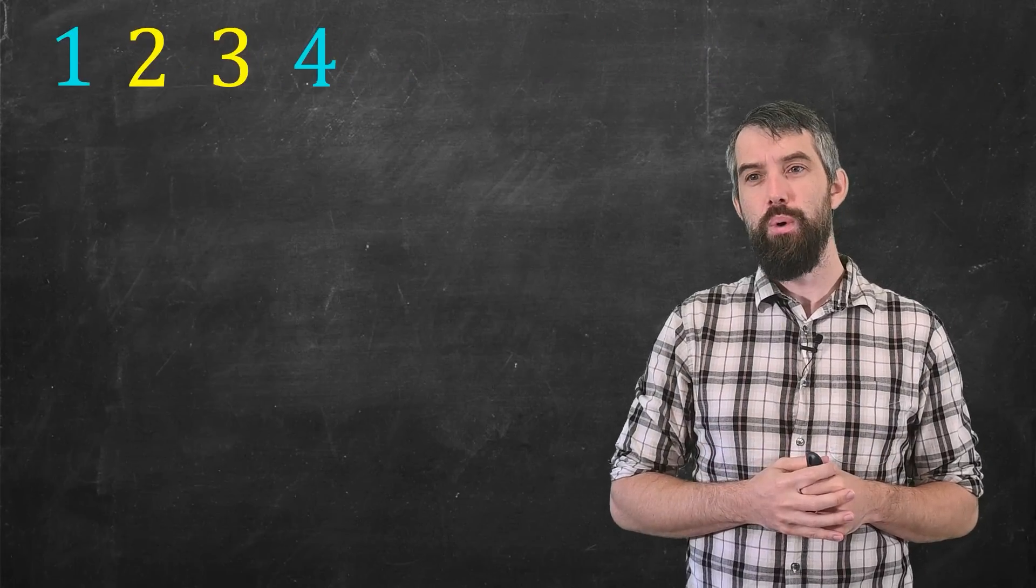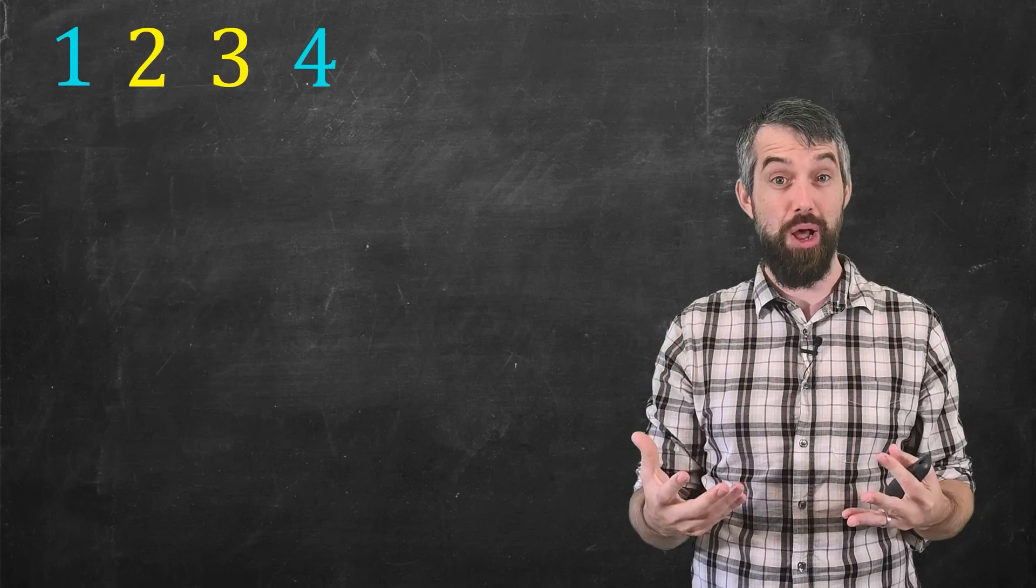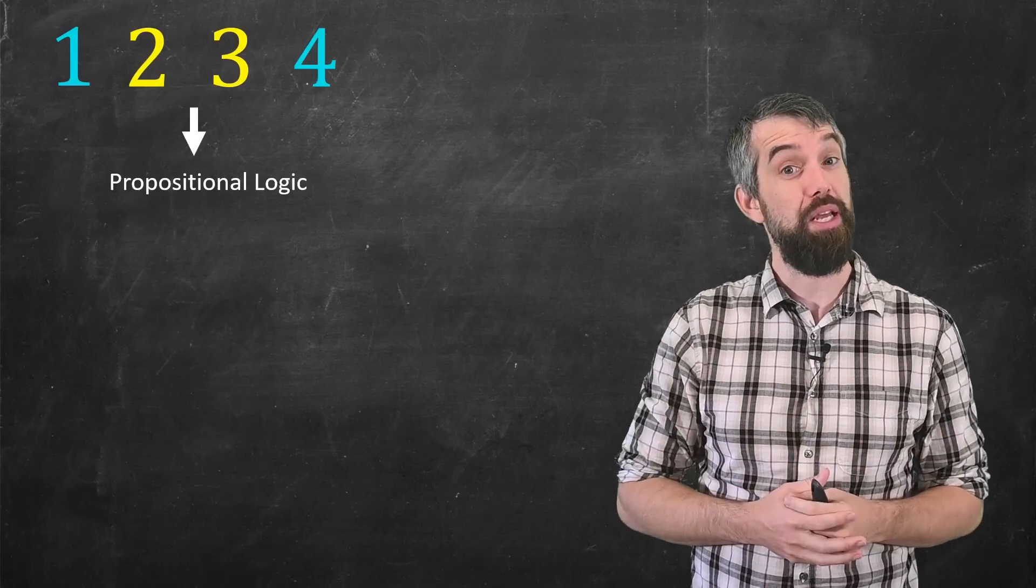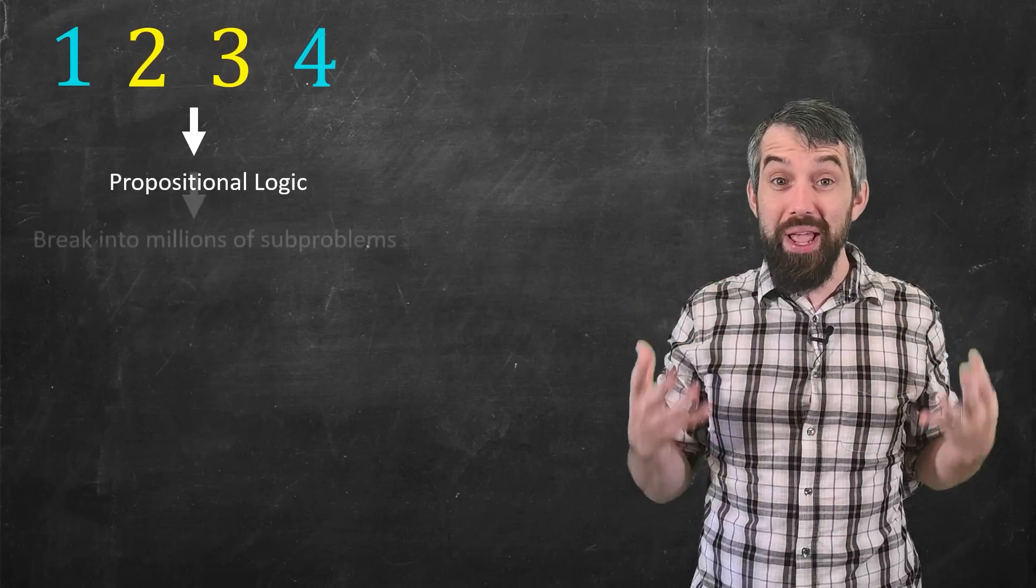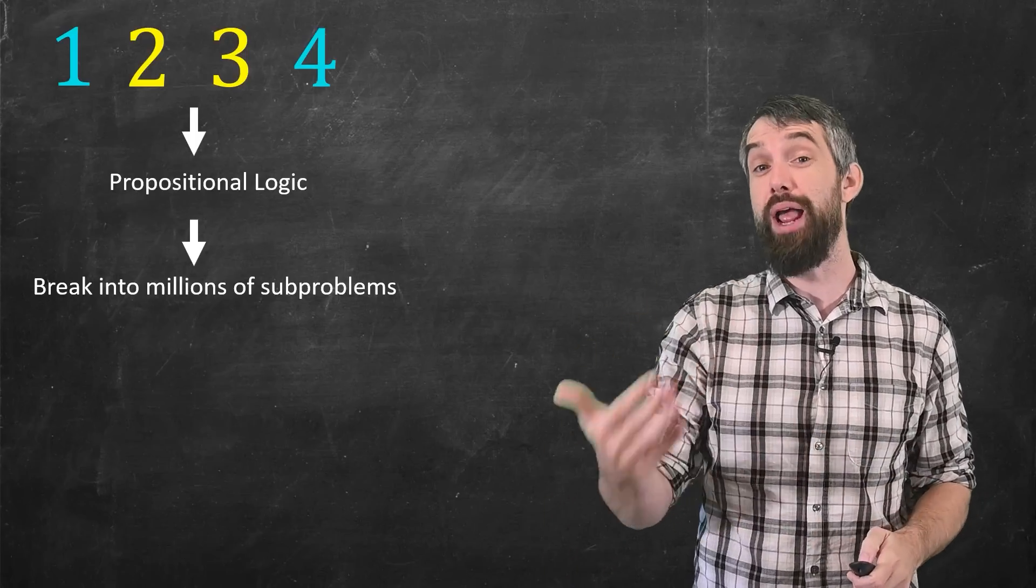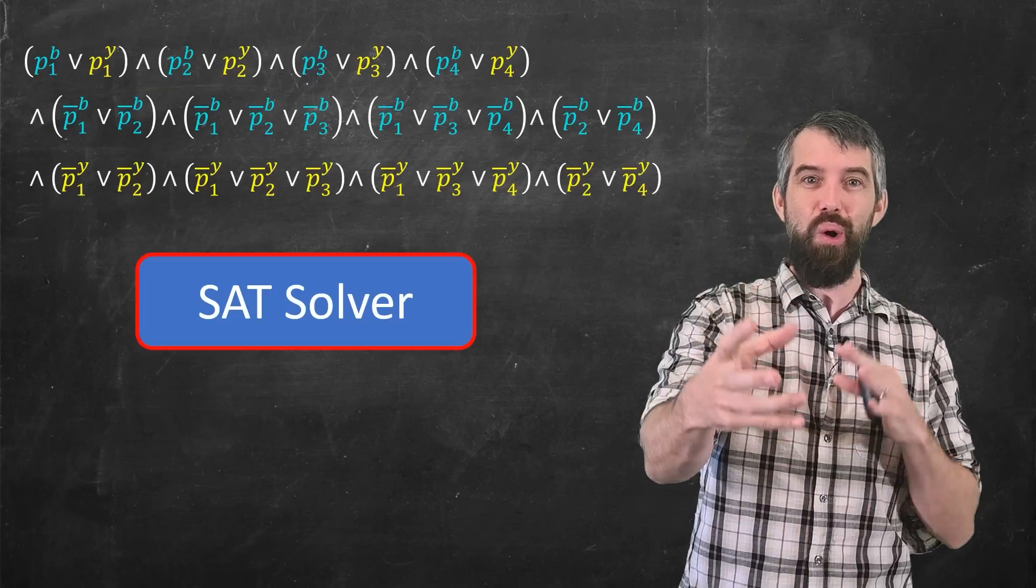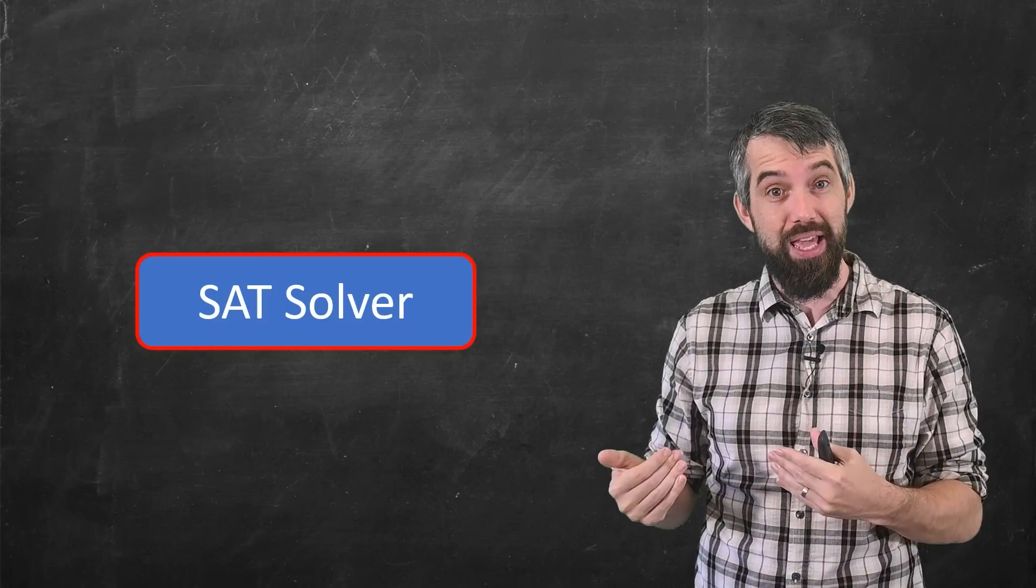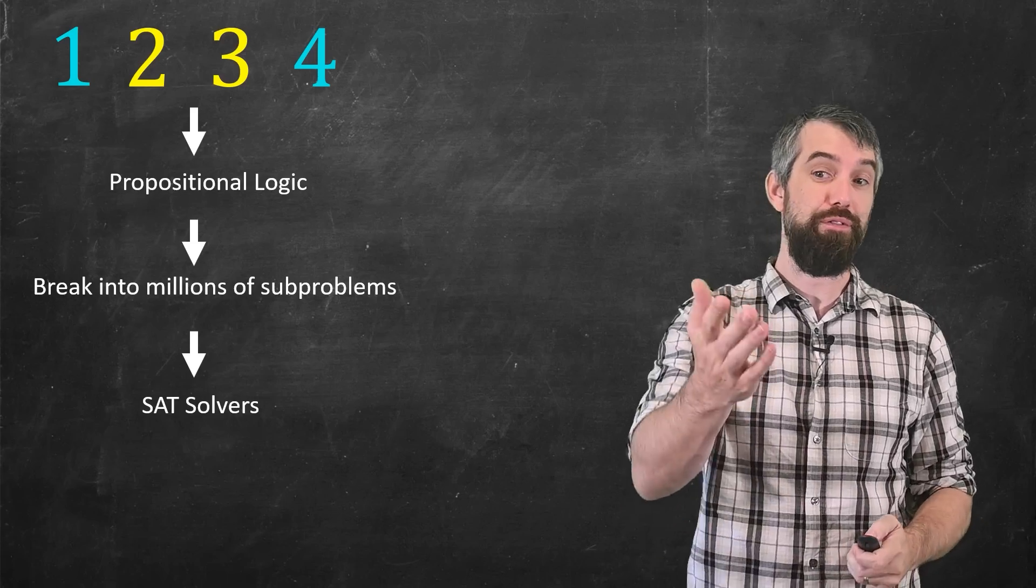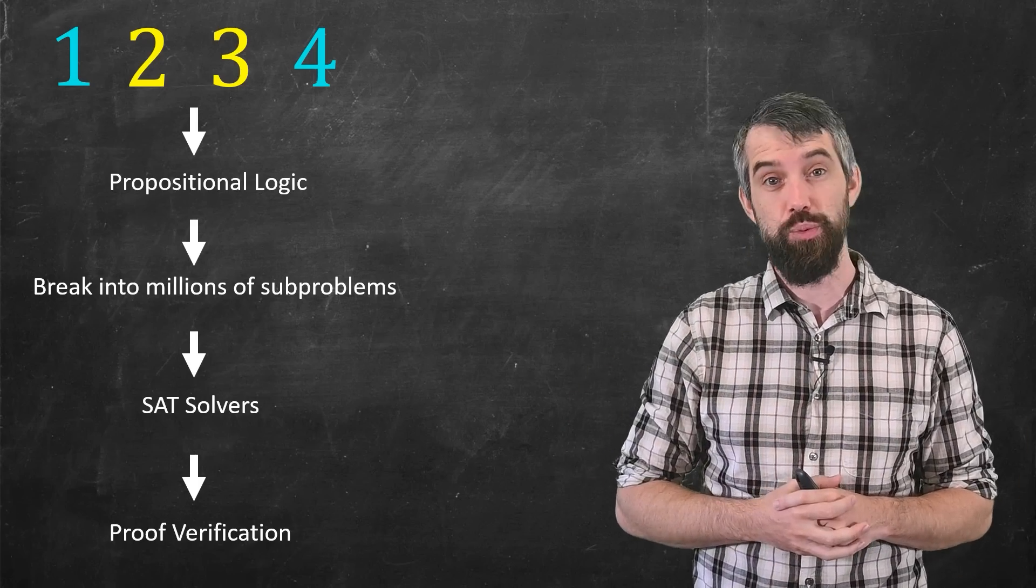And so, here's our plan. What we're going to start is taking this problem, and we're going to re-encode it. We're going to transform this problem into something called propositional logic. I'll explain that in a moment, but the idea is it's a translation issue then. When our problem is in propositional logic, what we're going to try to do is we're going to break this big problem into millions of smaller subproblems. And we can use computer algorithms called SAT solvers for satisfiability. And these incredibly powerful algorithms are able to look at all of these subproblems and compute away whether or not there's going to be a solution. And indeed, this method works, but this paper can't be complete without the final step, which is to verify the proof.